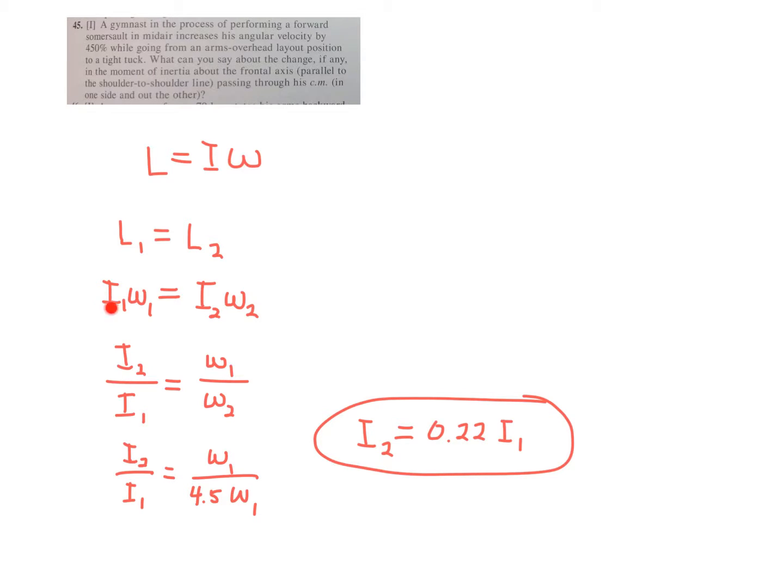So in other words, we have I1 omega1 before this guy goes into his tuck, equals I2 omega2 after he goes into the tuck. So this is before he tucks in, this is after he's tucked in.